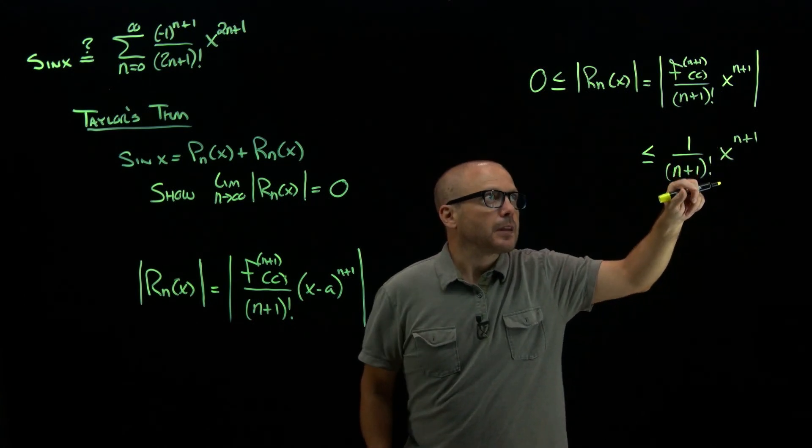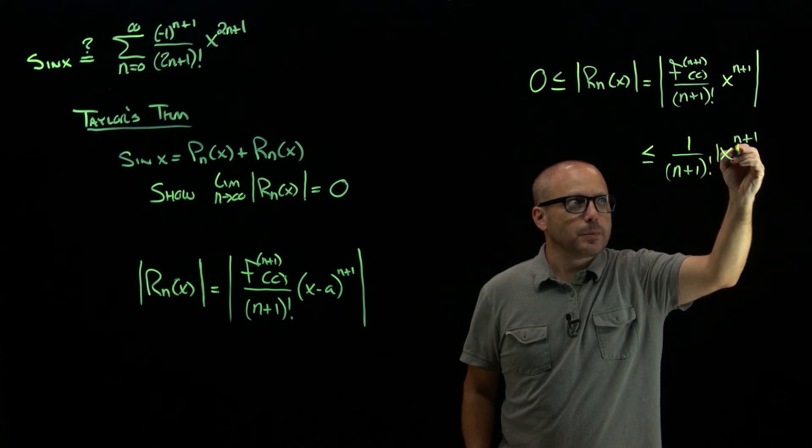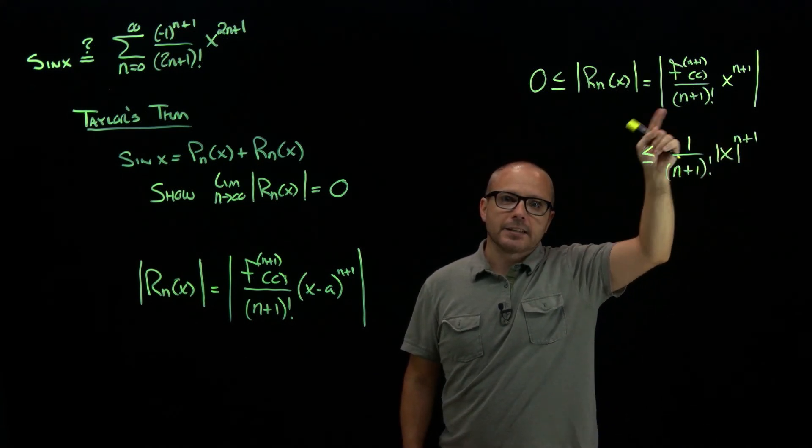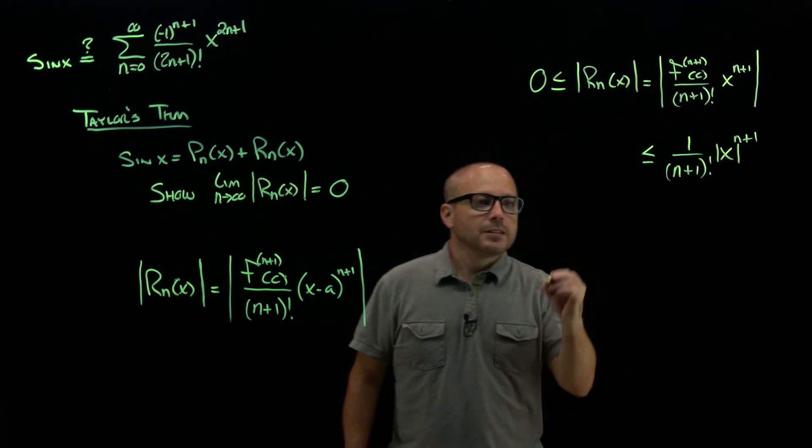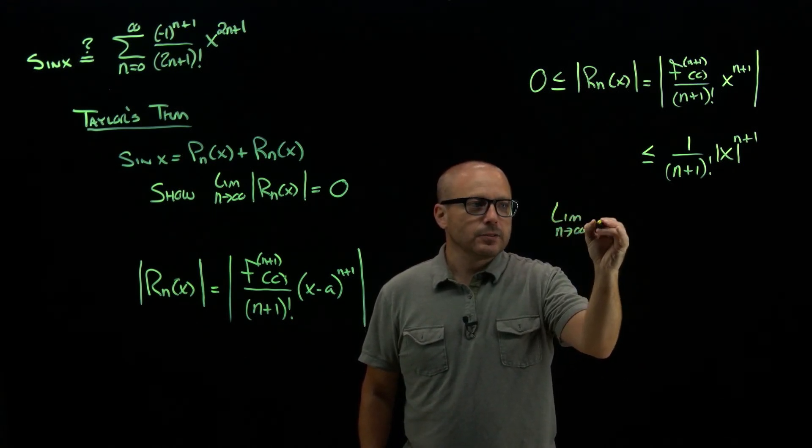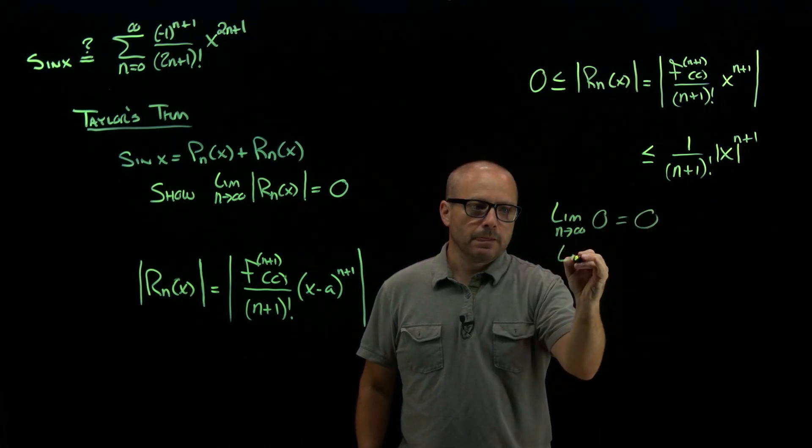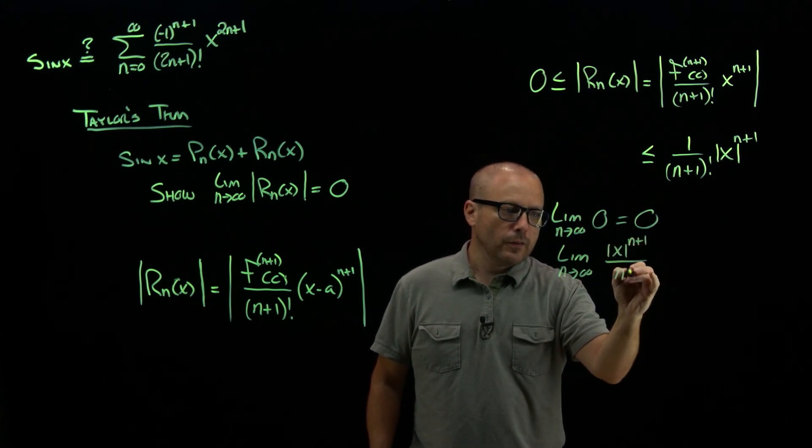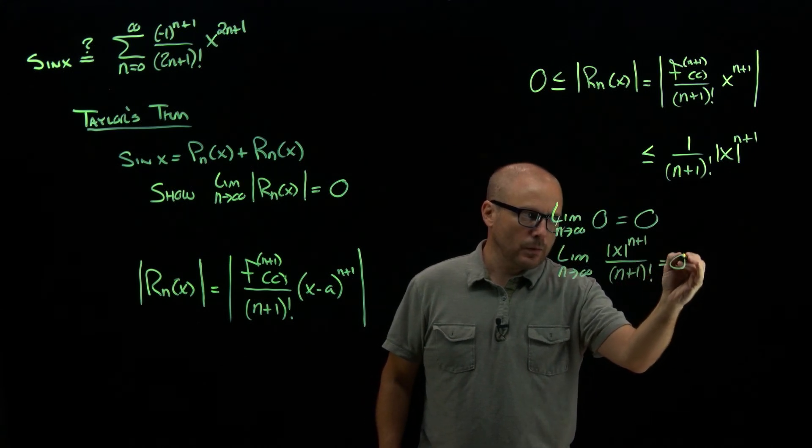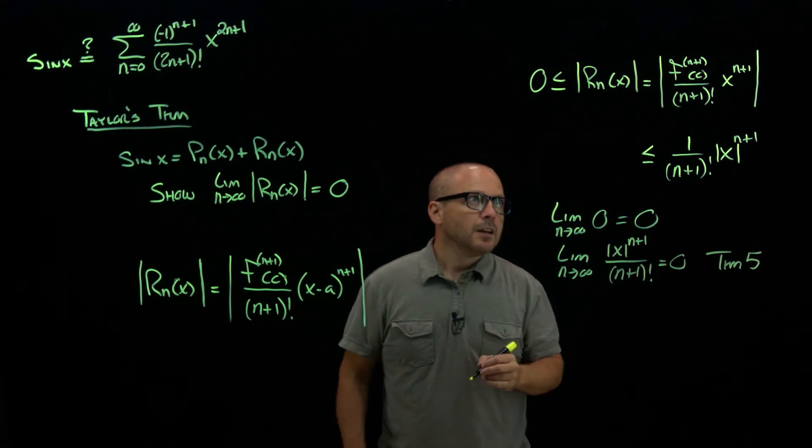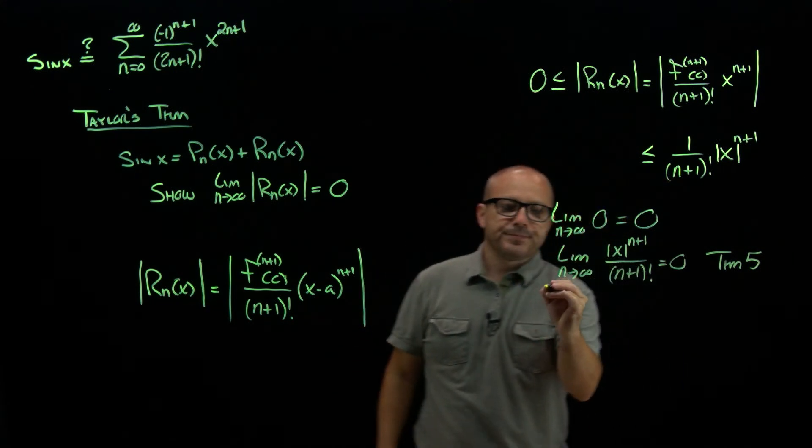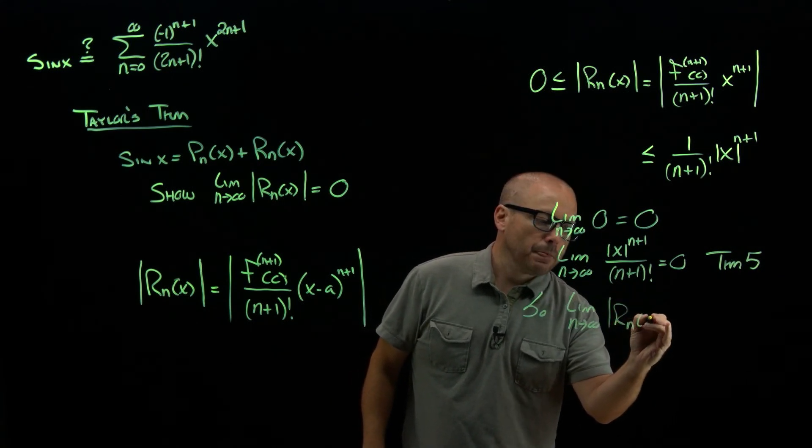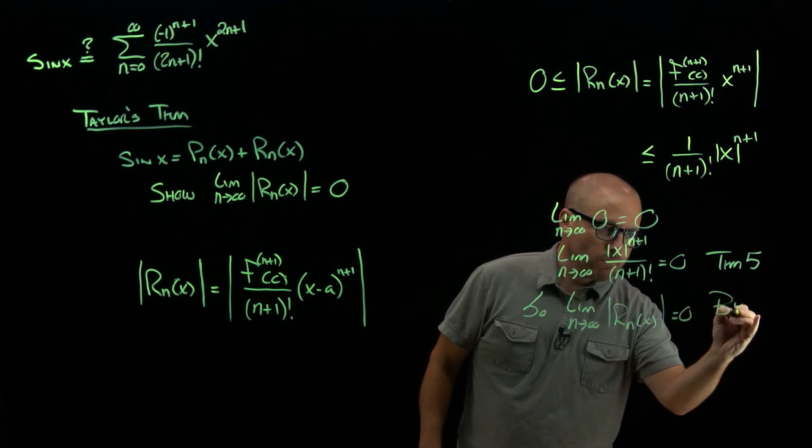And now I have exactly what I want because I've sandwiched our error magnitude between 0 and this expression. And remember, x could be negative, so let's put an absolute value there. That's inside an absolute value. This is really that statement from theorem 5, x to the n over n factorial goes to 0. So the limit, trivially, as n goes to infinity of 0, is 0. And the limit as n goes to infinity of absolute value of x to the n plus 1 over n plus 1 factorial is 0 by theorem 5. Our error is trapped between those two. So by sandwich theorem, the magnitude of our error is 0 as well.